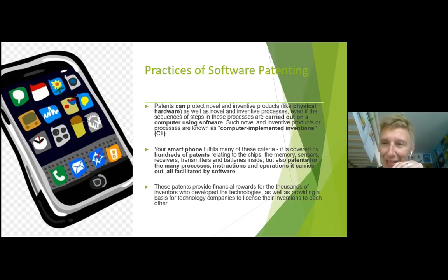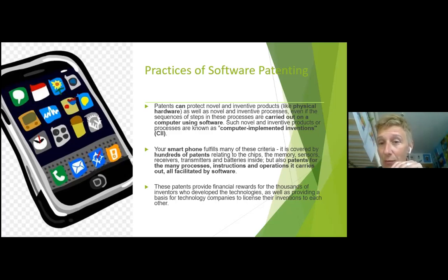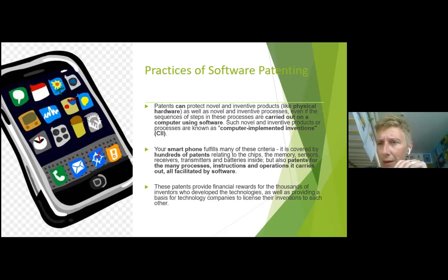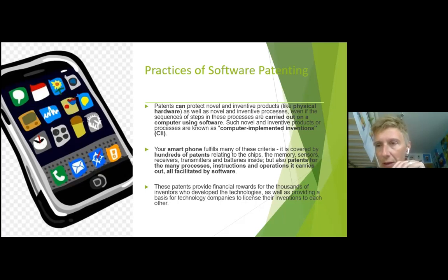The way your software works on a smartphone can be protected by a patent, but the smartphone itself also has many things patented — chips, receivers, transmitters, batteries, and external devices. For example, the Samsung Galaxy's new pen that enables you to write and have your handwriting converted into text or even speech is a good example of software working with hardware as a computer-implemented invention that is patentable.